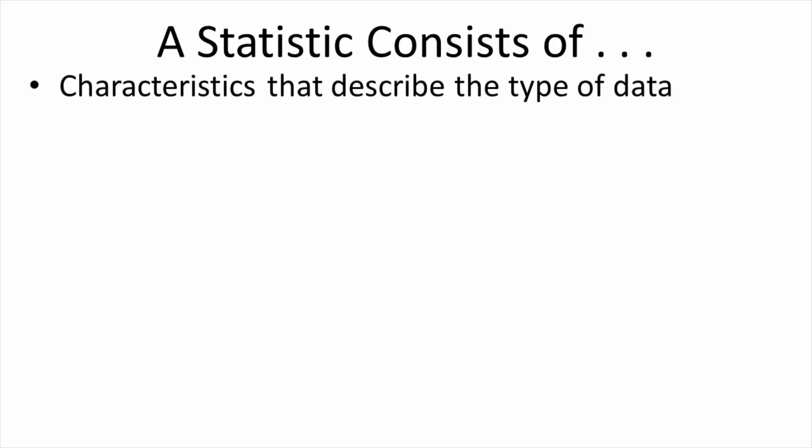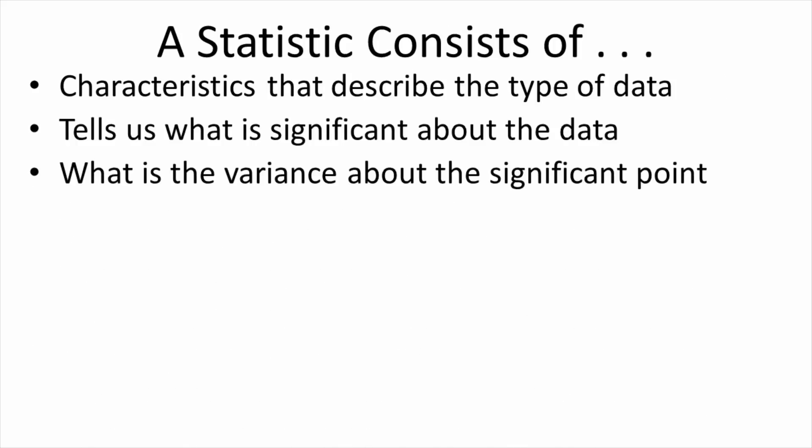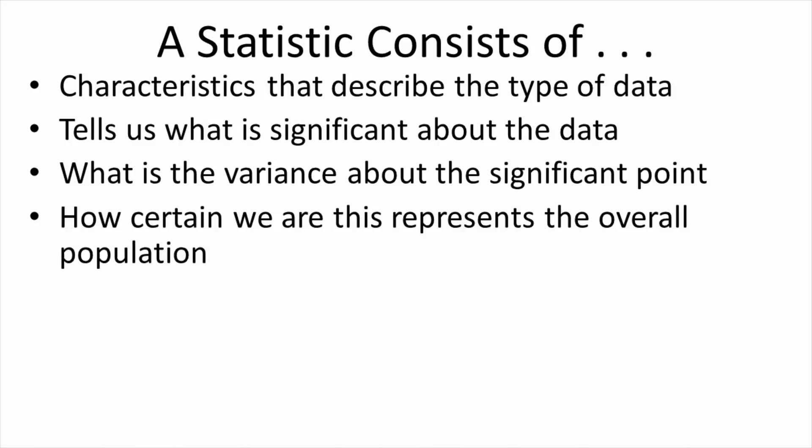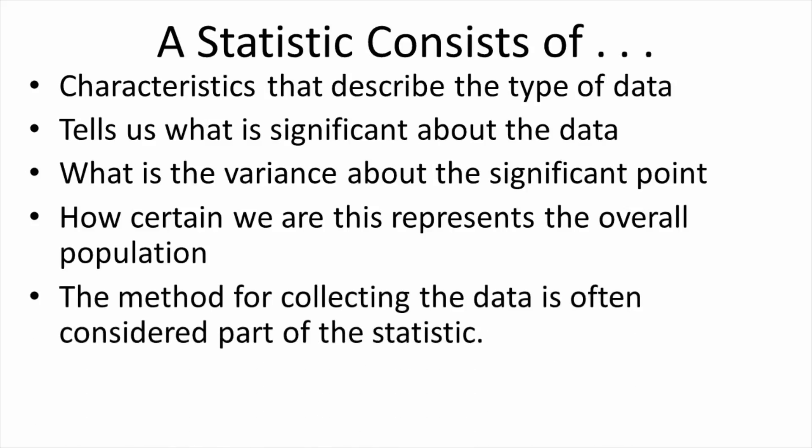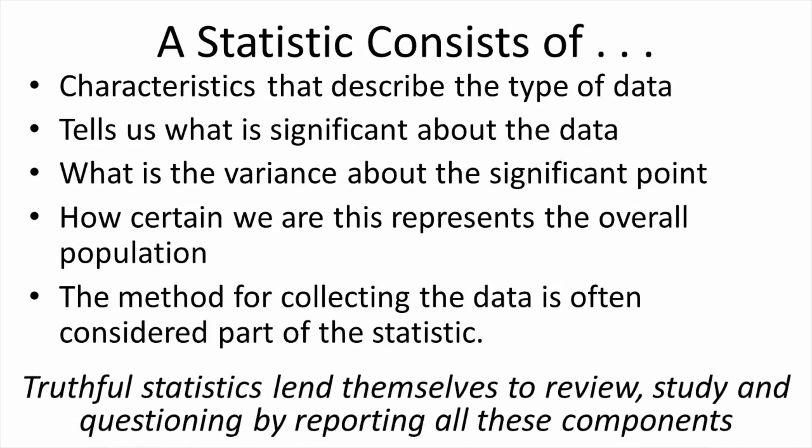So what you've seen here is that a true statistic consists of characteristics that describe the type of data. It tells us what is significant about the data, what is the variance about the significant point, and how certain we are that this represents the overall population. Oftentimes, the method for collecting the data is considered part of the statistic and must be subject to review. The point here is that truthful statistics lend themselves to review, study, and questioning by reporting all these components.